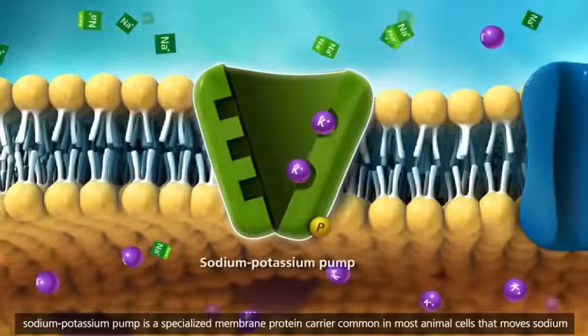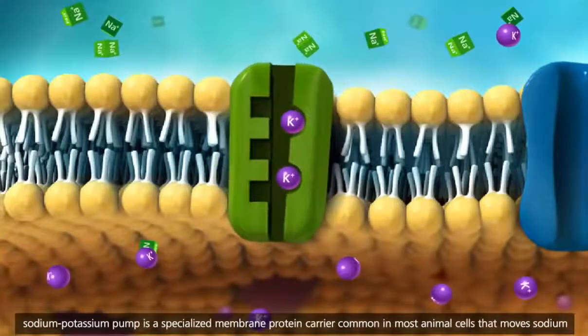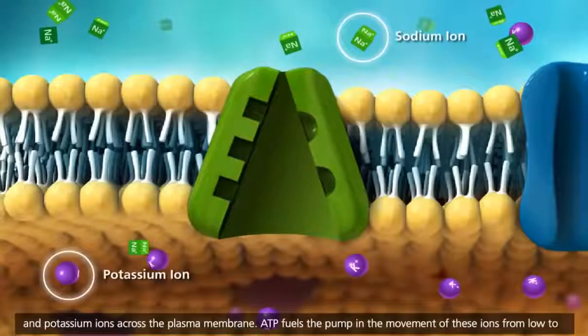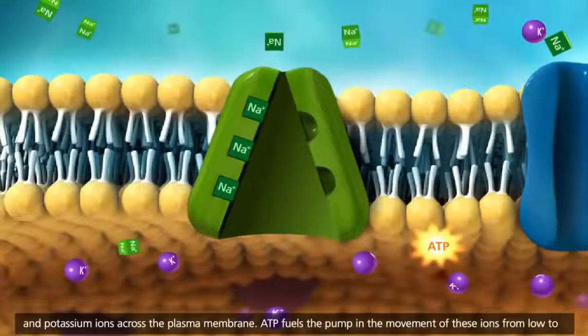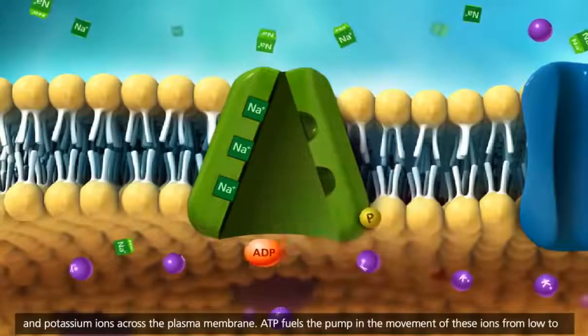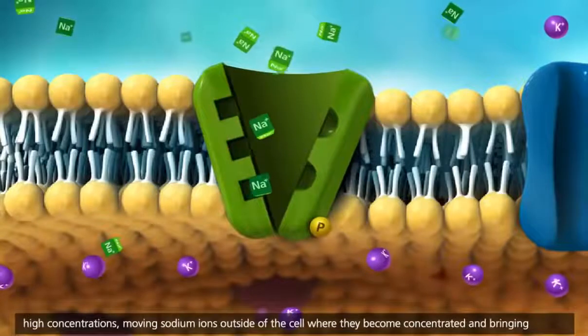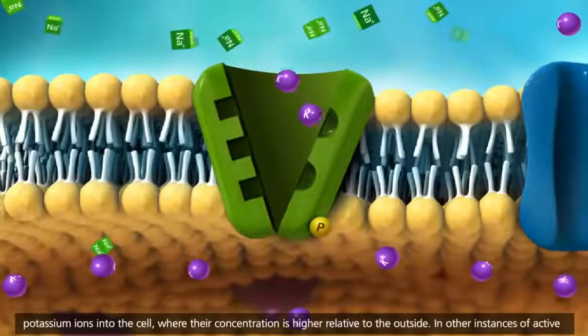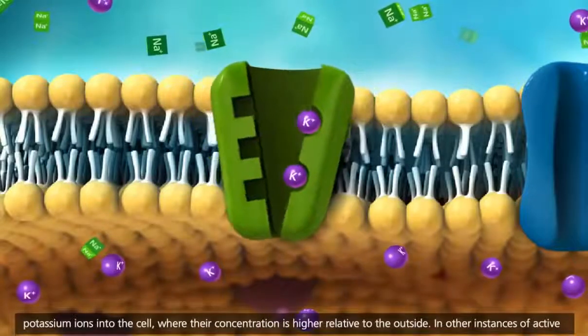The sodium-potassium pump is a specialized membrane protein carrier, common in most animal cells, that moves sodium and potassium ions across the plasma membrane. ATP fuels the pump in the movement of these ions from low to high concentrations, moving sodium ions outside of the cell, where they become concentrated, and bringing potassium ions into the cell, where their concentration is higher relative to the outside.